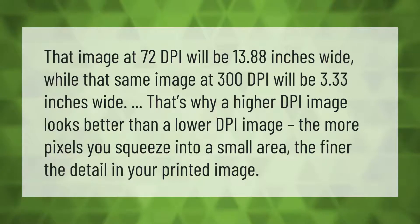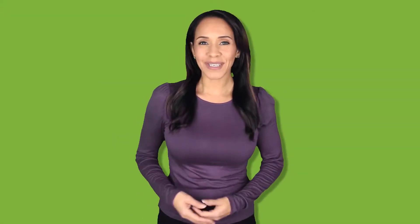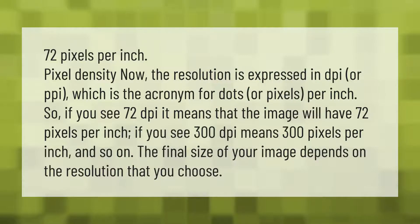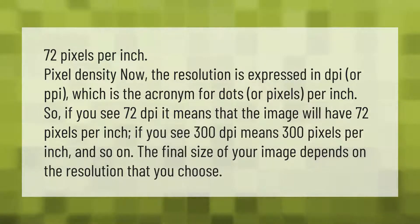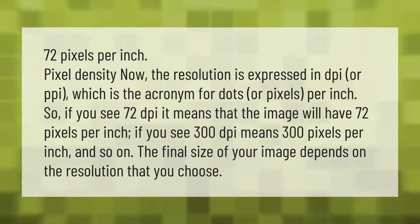Pixel density and resolution are expressed in DPI or PPI, which stands for dots or pixels per inch. So if you see 72 DPI, it means the image will have 72 pixels per inch. If you see 300 DPI, it means 300 pixels per inch, and so on. The final size of your image depends on the resolution that you choose.